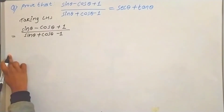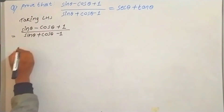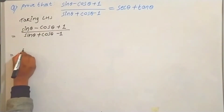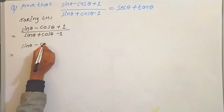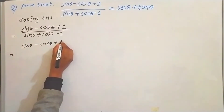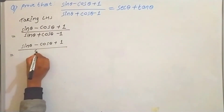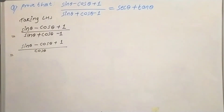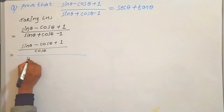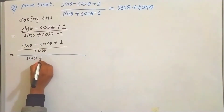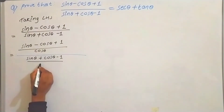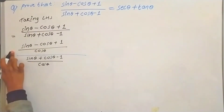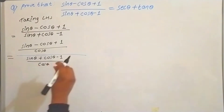Taking LHS: (sin θ − cos θ + 1) upon (sin θ + cos θ − 1). I will now divide the numerator and denominator by cos θ.